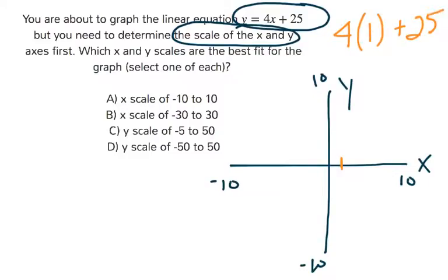And you can see already we have a problem. 4 times 1 is 4, plus 25 is 29. So at 1, the point is actually 1, 29.